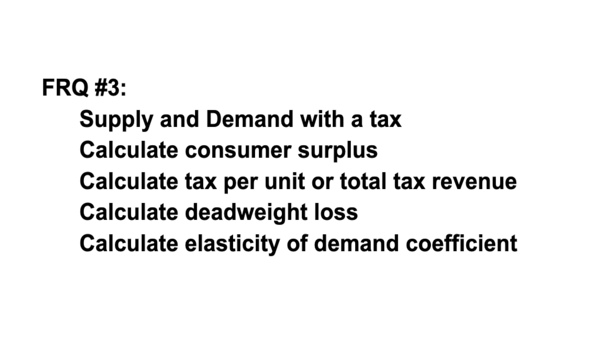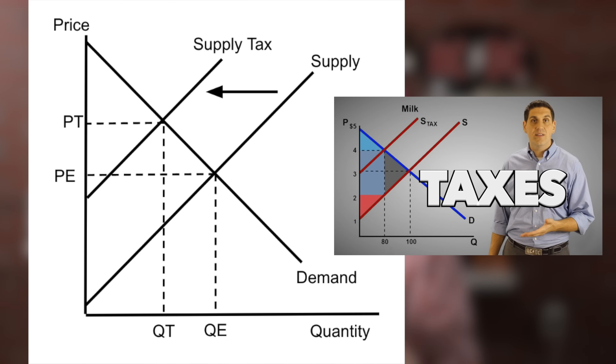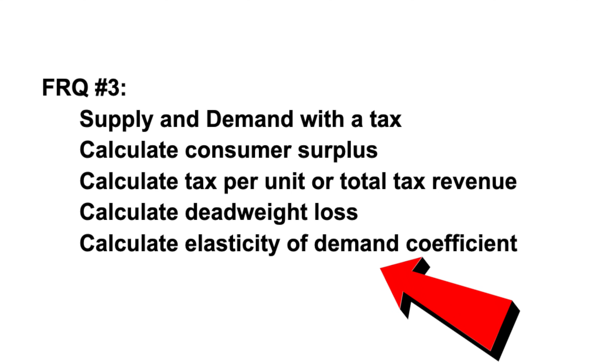For micro free response number three, I think they're going to ask about taxes. The AP test loves questions that require you to calculate things — consumer surplus, deadweight loss, or tax revenue that goes to the government. Make sure you understand that and the idea of the elasticity of demand coefficient. Remember, the College Board has been asking students more and more to show their work. So if you see 'show your work,' set up the equation and go through all the steps of how you got that right answer.